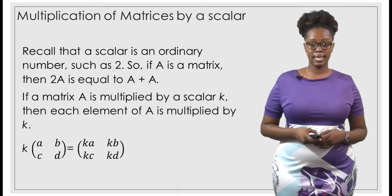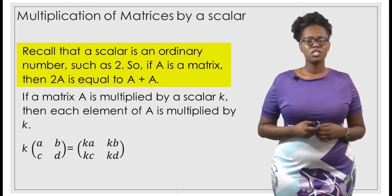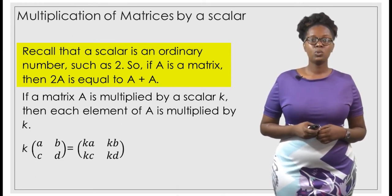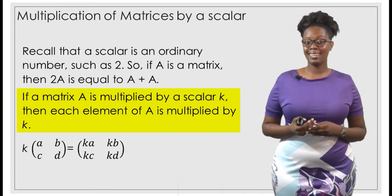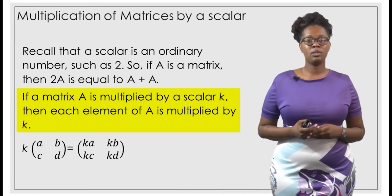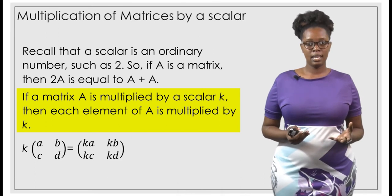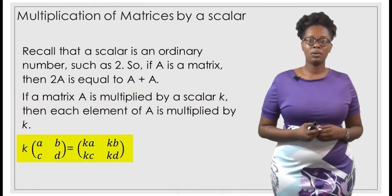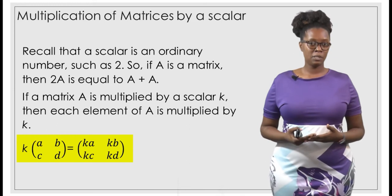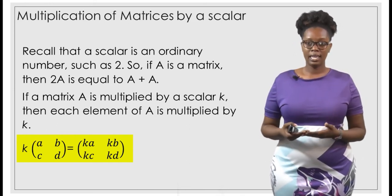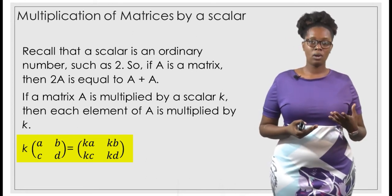Multiplication of matrices by a scalar. A scalar is an ordinary number, such as 2. So if A is a matrix, then 2A equals A plus A. If a matrix A is multiplied by a scalar K, then each element of A is multiplied by K. We explored this concept when multiplying vectors by scalars — it's the same principle. So K times the matrix with elements A, B, C, D gives KA, KB, KC, KD.